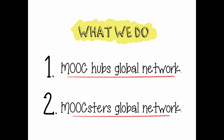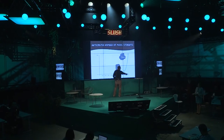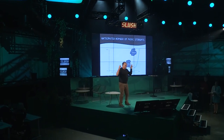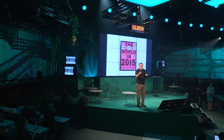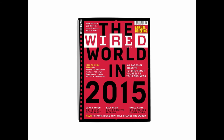What we want to do now is two things: we make a global MOOC hub network all over the world, and we build a network of MOOCsters all over the world. If you think about the future — it's going to jump from this year to 2020 to a billion students — it becomes a big business and a huge change in the world. This is the Wired magazine, which says what the big things will be in 2050. Not by luck, they chose us — Education City — and what we are doing with the MOOC is one of those big things.